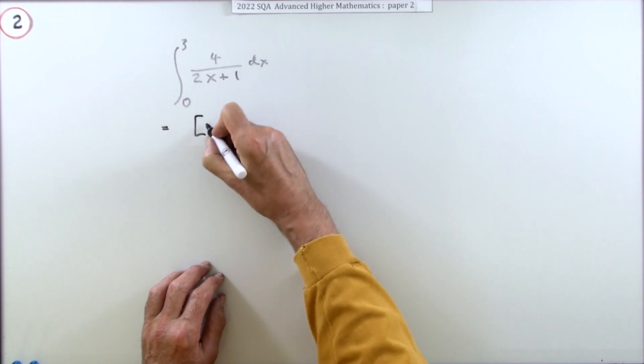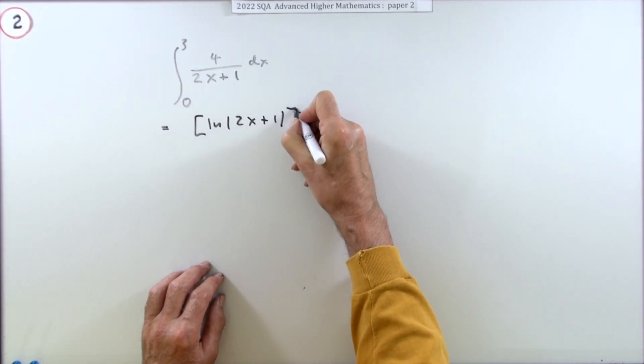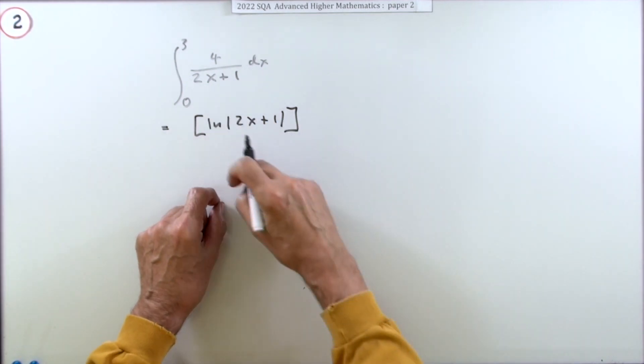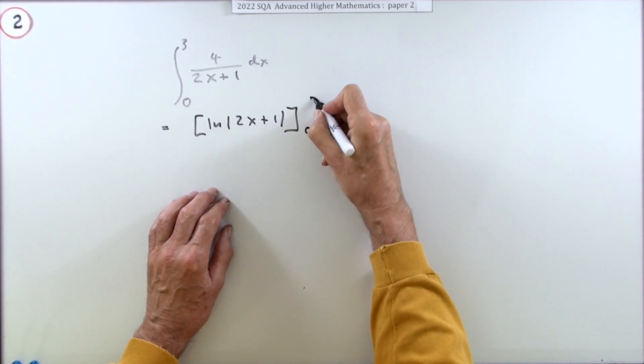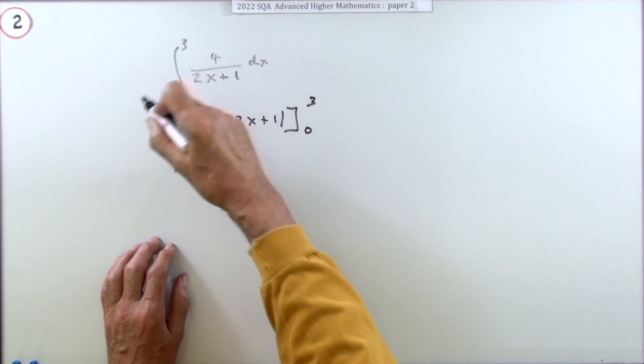You could just go straight in with that one then - that'll go back to log of the denominator. Should really put that inside the modulus signs because you can't put a negative into the log because it just blows up on you - evaluated from zero to three.